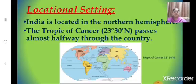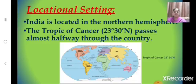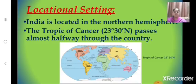Now let us learn about locational setting — that is, where is India located? India is located in the northern hemisphere. The Tropic of Cancer, that is 23 degrees 30 minutes north, passes almost halfway through the country. Looking at this world map, you can see India is located in the northern hemisphere, and the Tropic of Cancer passes almost halfway through India.